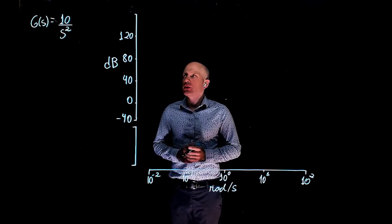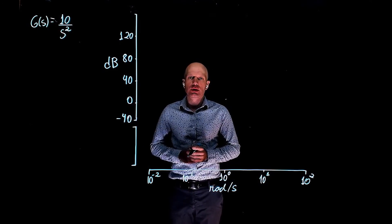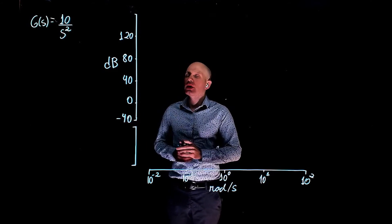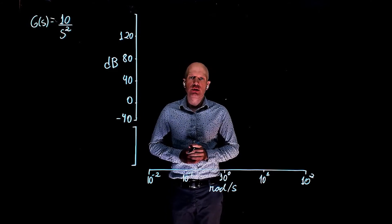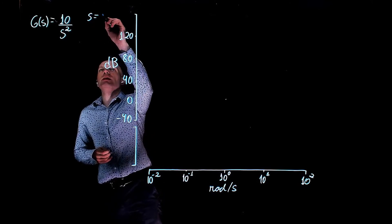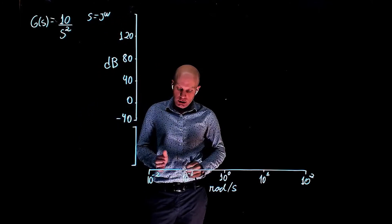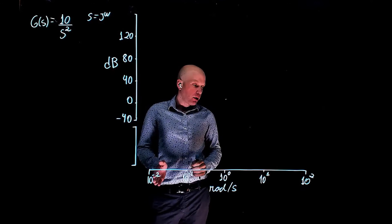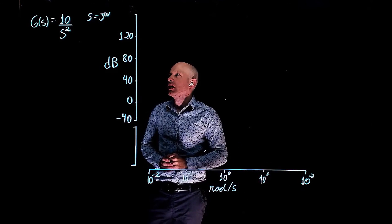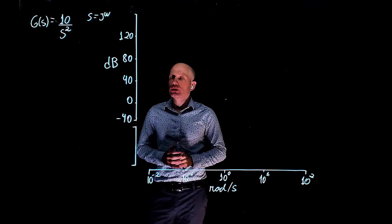In this example, we are looking for the Bode plot of the function g of s equals 10 over s squared. The Bode plot will display the magnitude and the phase of g of s when s is equal to j omega, omega being the frequency that we are going to limit here to 10 to the power of negative 2 to 10 to the power of 2 radians per second.